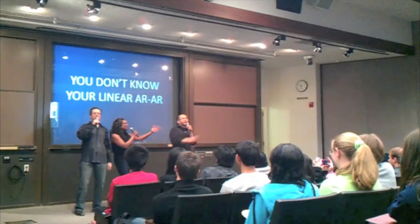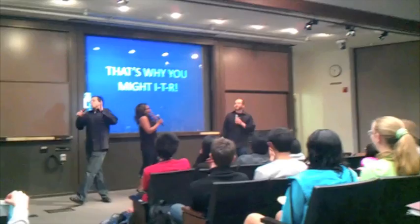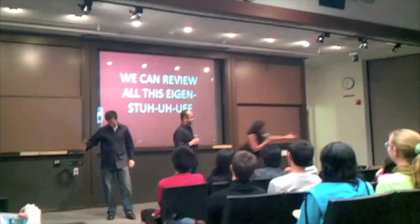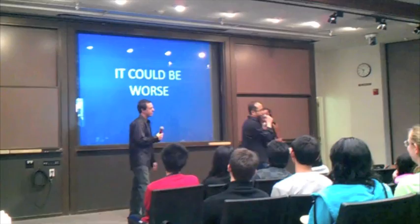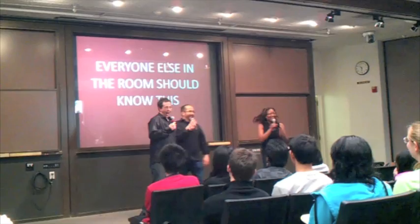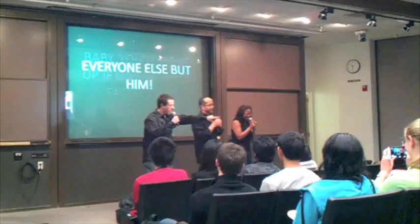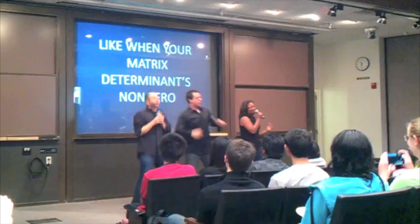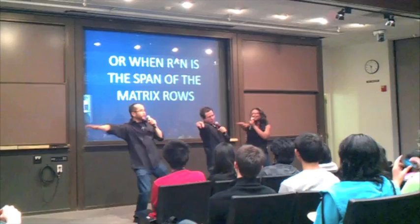That's why you might ITR. That's enough — let's not be rough. We can't explain all this eigenstuff. So let's not curse — it could be worse. When does a matrix possess an inverse? Everyone else in the room should know this. Everyone else but him. Like when your matrix's determinant is non-zero, or it's the span of the matrix rows — that's how you know.